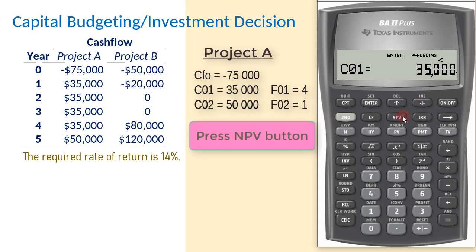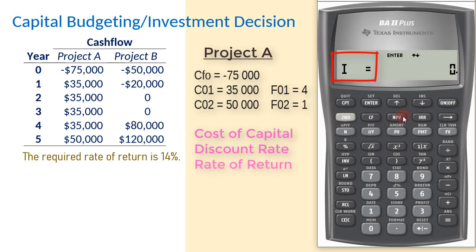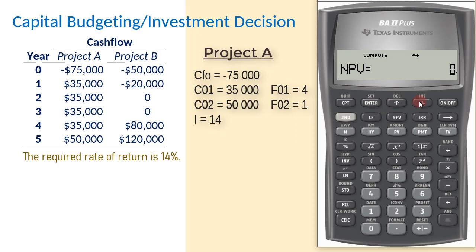Next, press the NPV button. I here is the interest rate, which is sometimes referred to as the cost of capital, discount rate, or rate of return, as in this case. We input 14 for the rate of return, enter, scroll down, and you have NPV. Press Compute, and we have $52,948.36.